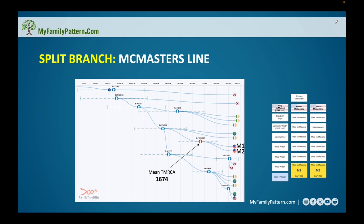The results for my two McMasters representatives, M1 and M2, showed that the haplogroup created — shown in orange — had a common ancestor born about 1674. It's probable that this ancestor isn't Thomas himself but probably Thomas's father, since based on that 1674 date, Thomas was likely born around 1700 — consistent with the limited data I have.